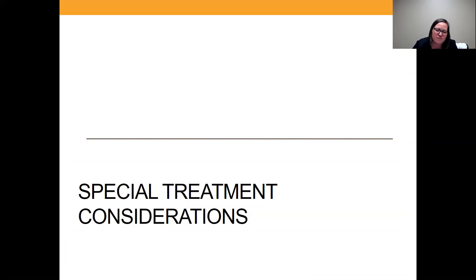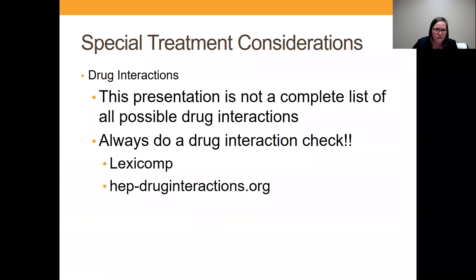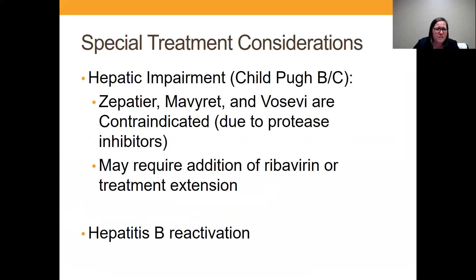For other special treatment considerations: always do a drug interaction check — hep-druginteractions.org is a great one to use. Patients who have hepatic impairment — Child-Pugh B or C — you're going to avoid medications that have a protease inhibitor when patients have decompensated cirrhosis. So you can't use Zepatir, Mavyret, or Vosevi in that population. Depending on the patient's situation, you may need to extend treatment for patients who have decompensated cirrhosis, or there are recommendations to add ribavirin, though ribavirin may not be available right now.